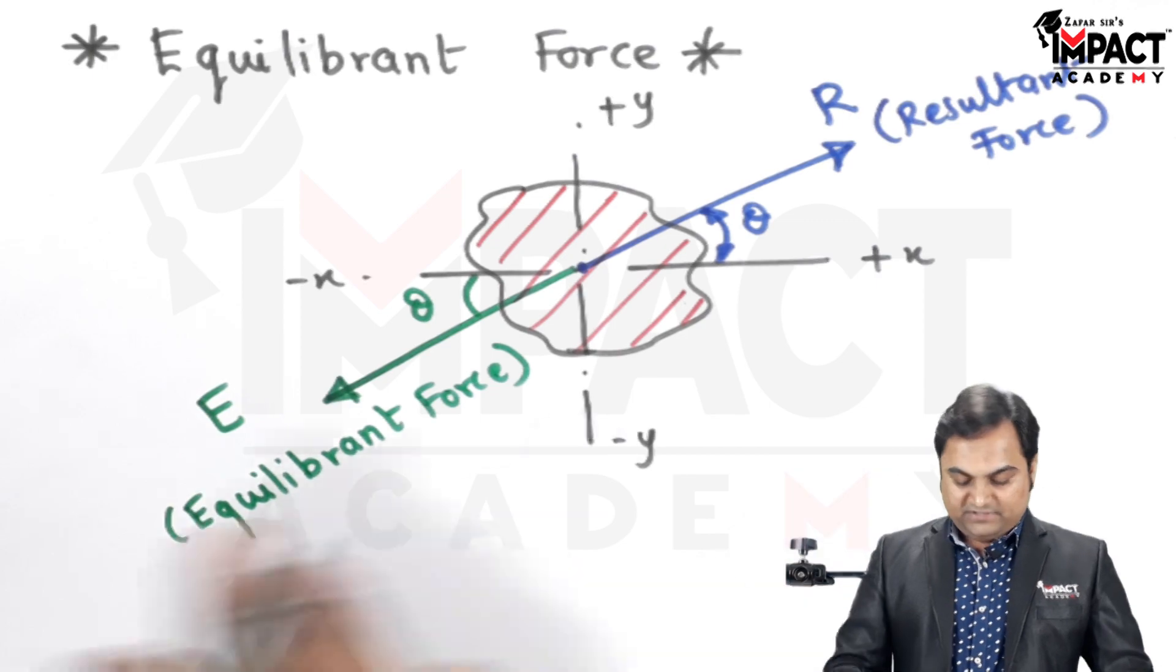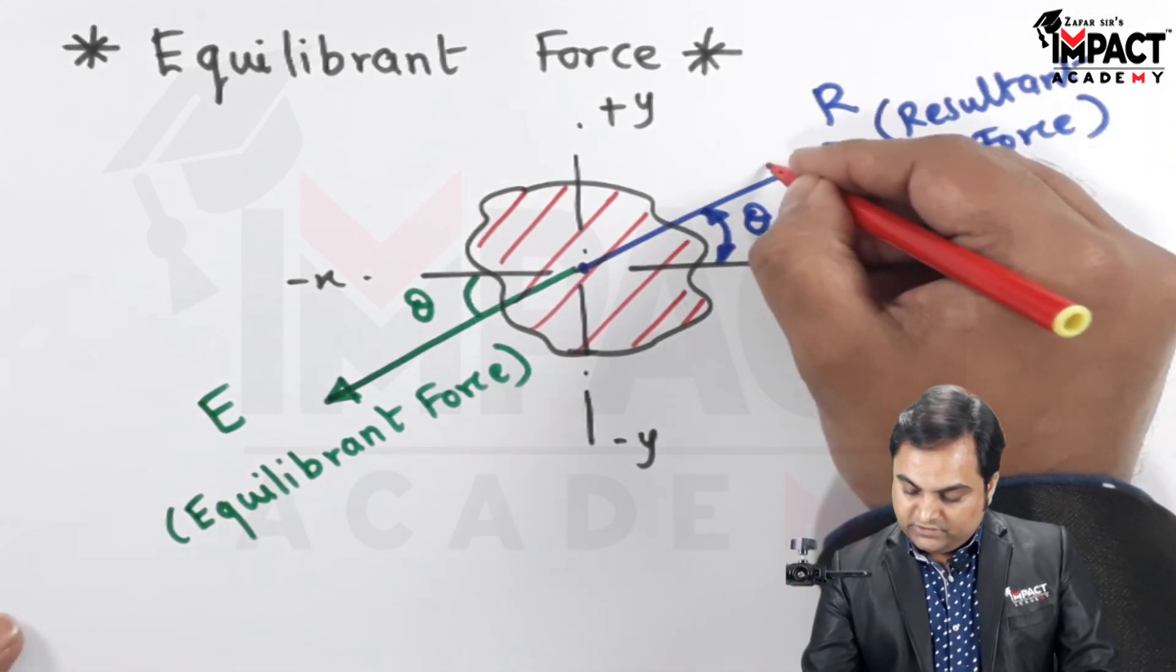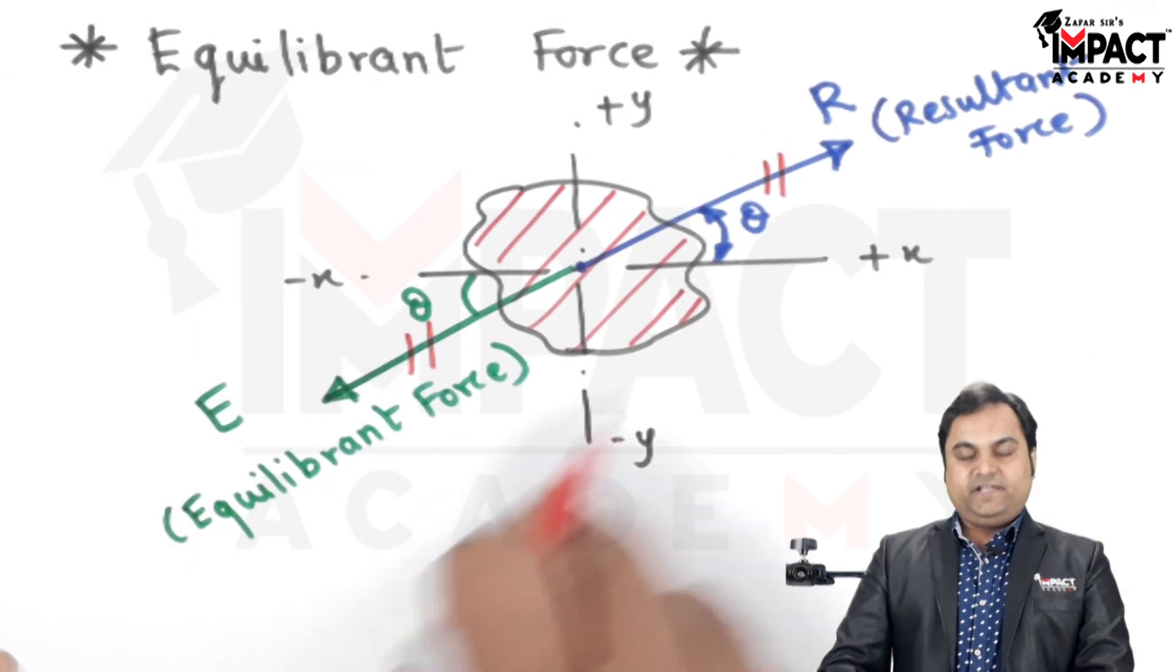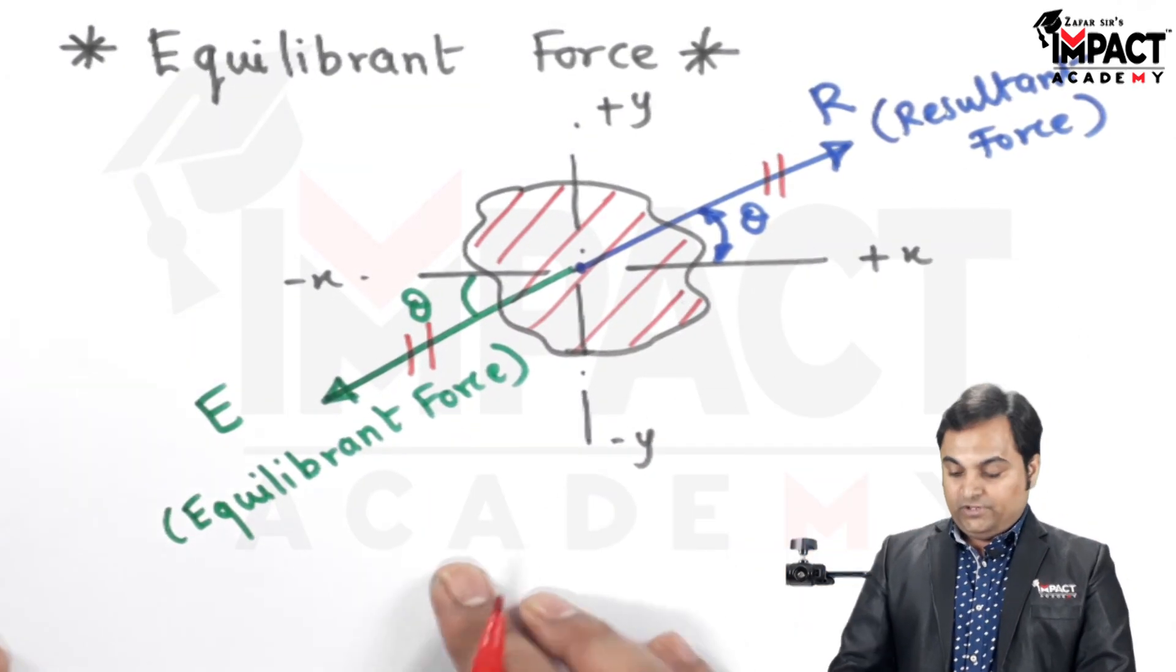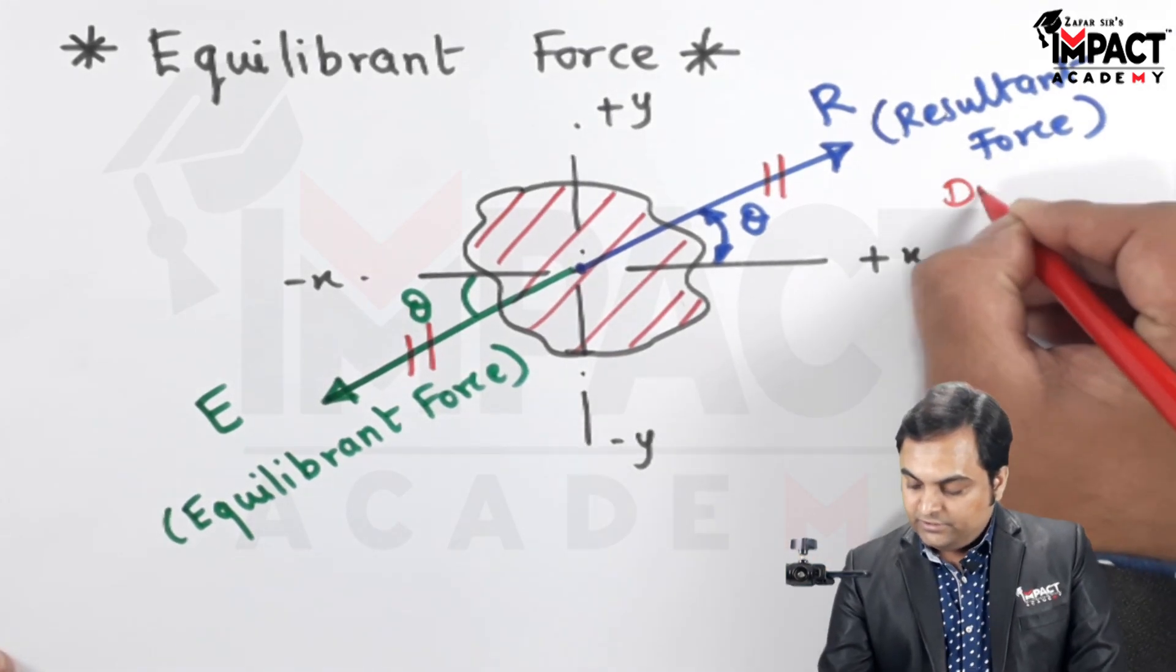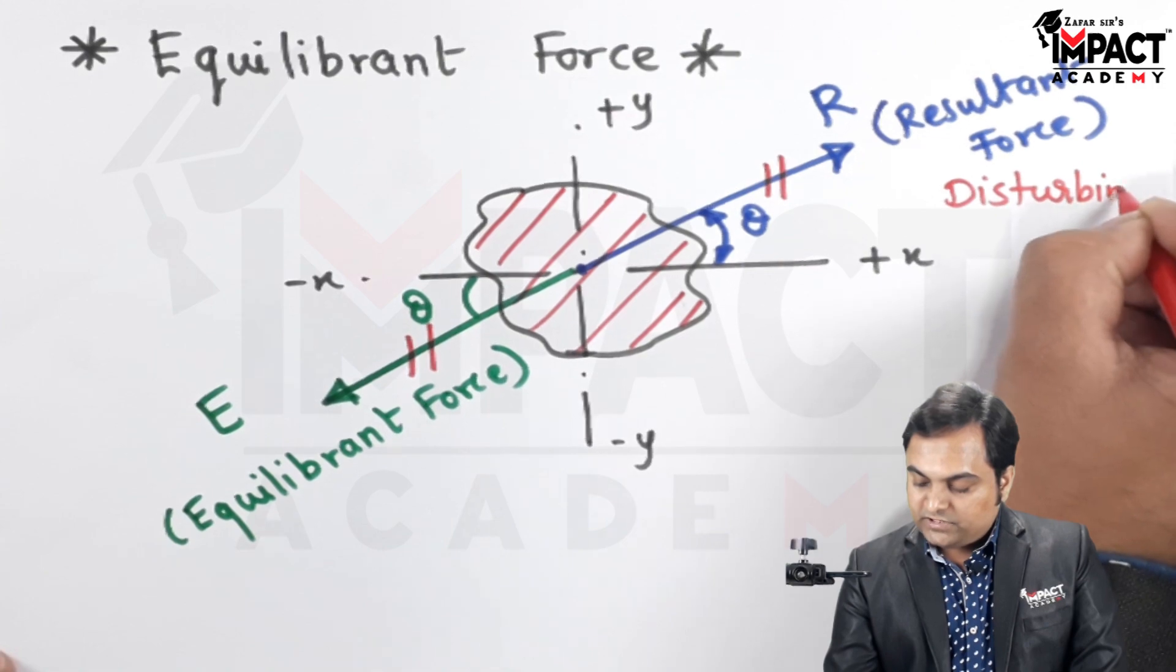So from this diagram we can make out that both resultant and equilibrium force are having the same magnitude. The directions are opposite. One is the disturbing force, that is the resultant force is the disturbing force which will try to change the state of the body.